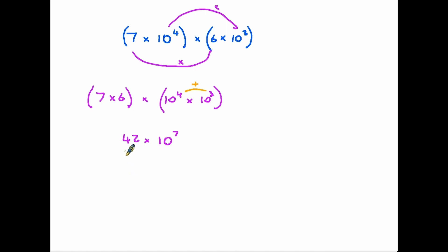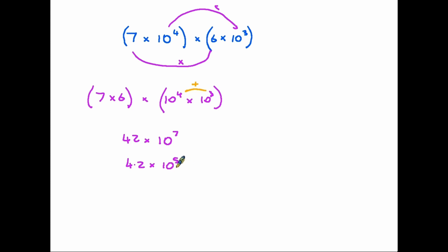However, you will notice that at this point the result is not in standard form. Don't forget, in standard form the number in front has to be between one and ten. So we need to divide forty-two by ten, which turns it into four point two. Because we have done that, we increase the power by one, so it becomes ten to the power eight.